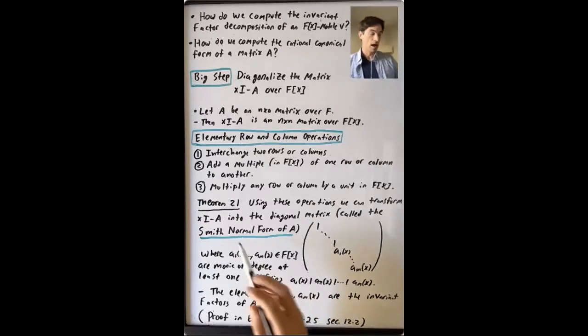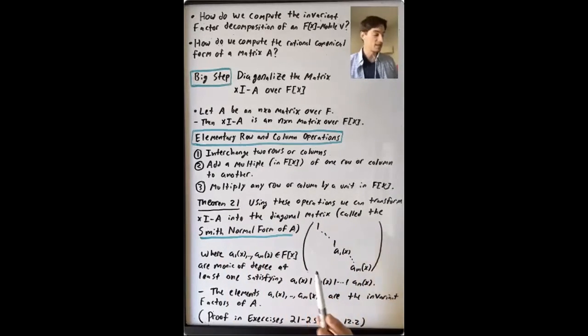So I'm not going to talk about the proof of this result in lecture. This is not a proof that you're going to need to know for the exams. I'll point out that the proof is outlined in exercises 21 to 25 of section 12.2 of Dummit and Foote, and the proof here depends also on some exercises from the previous section, section 12.1, that we didn't talk about.